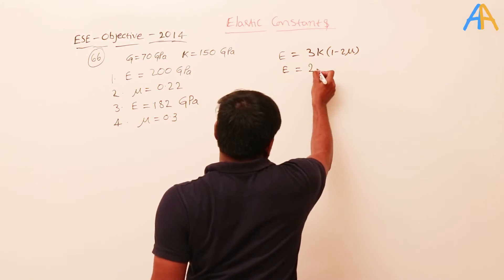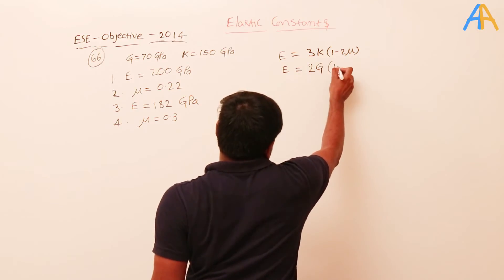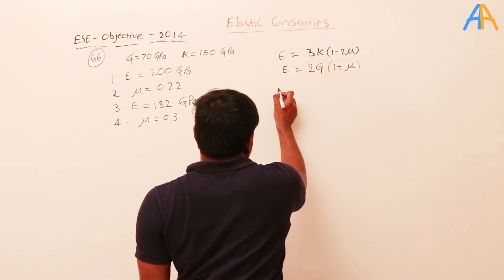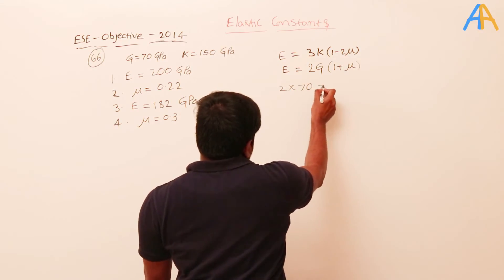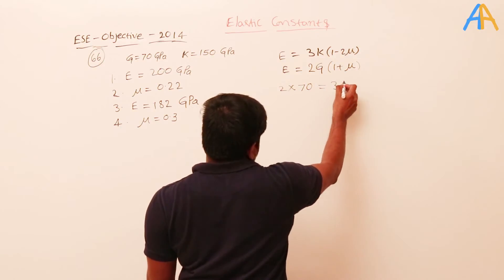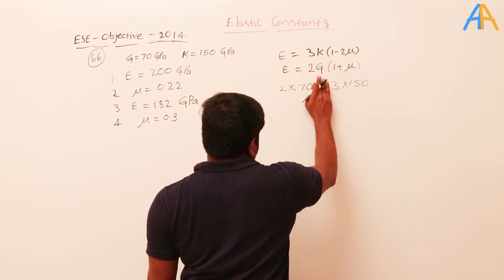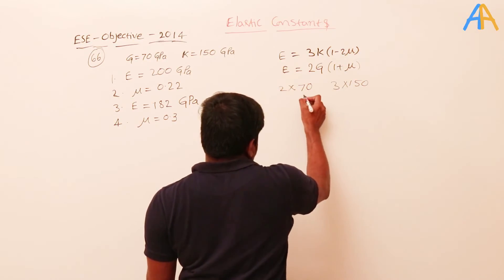If I equate these two formulas, then 2 into what is the value of G, that is 70, equals 3 into 150. So 2 into 70 into 1 plus μ equals 3 into 150 into 1 minus 2μ.